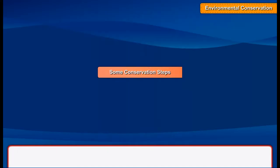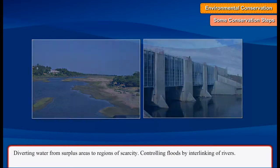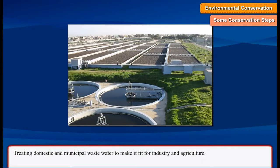Some conservation steps include: diverting water from surplus areas to regions of scarcity, controlling floods by interlinking of rivers, and treating domestic and municipal waste water to make it fit for industry and agriculture.